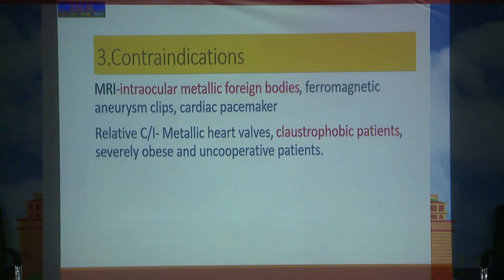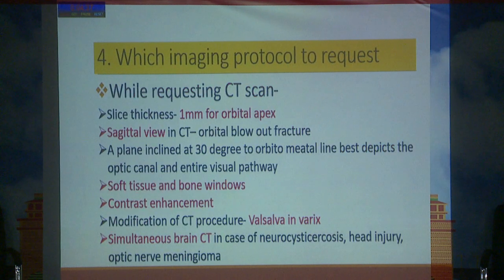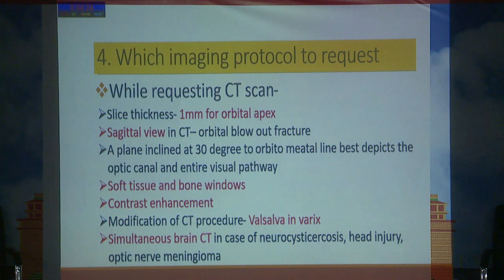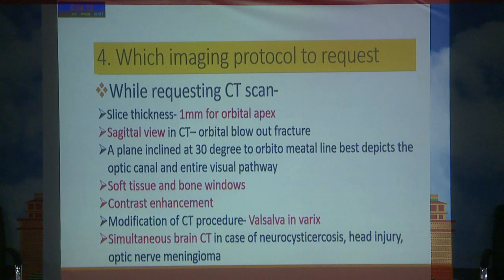We should know the contraindications for MRI — if there is any metallic foreign body or in claustrophobic patients, we should not advise MRI. Regarding CT imaging protocols, a slice thickness of 2 mm is usually enough for the orbit, but for orbital apex lesions a 1 mm slice thickness is required. Sagittal view in CT is required during orbital blowout fractures. Bone windows are needed if suspecting osteolytic lesions, and contrast enhancement is requested for vascular tumours or cystic lesions.